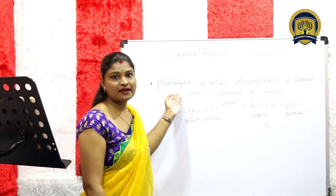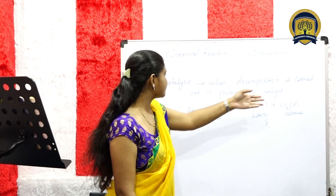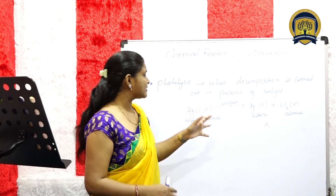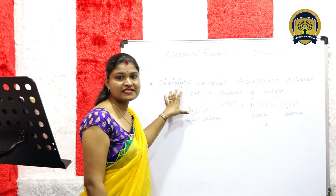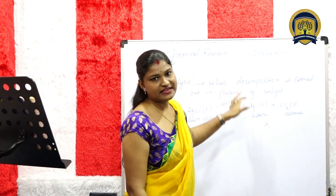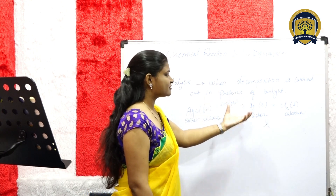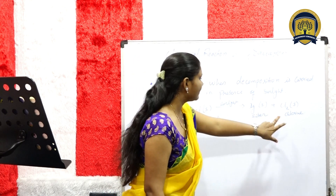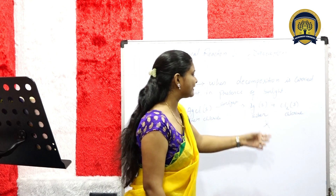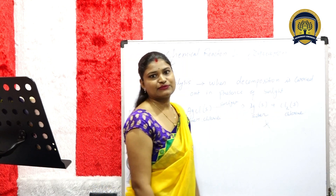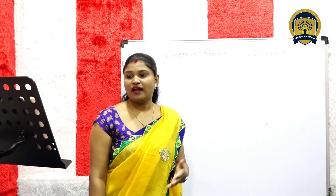Third, photolysis decomposition reaction: when decomposition is carried out in the presence of sunlight. Here we have silver chloride; when it reacts in the presence of sunlight, we get two products: Ag plus Cl2, that is silver and chlorine. This is the photolysis decomposition reaction, and this reaction is used in black and white photography.